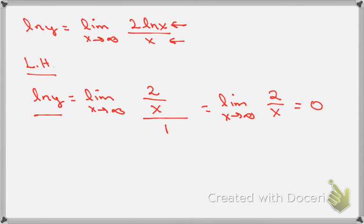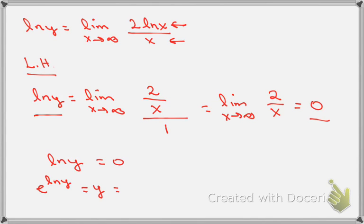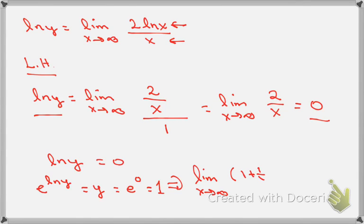As x goes to infinity, 2/x goes to 0. So the natural log of y equals 0. Since y was the original limit, I need to solve for y. If ln(y) = 0, I raise e to both sides: e^(ln y) = y = e^0 = 1. Therefore, the limit as x goes to infinity of (1 + 1/x)^(ln x) is equal to 1.